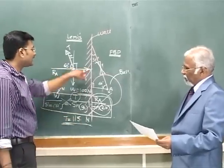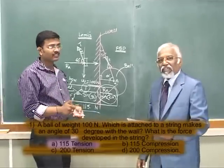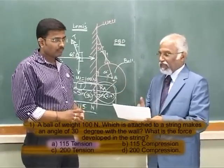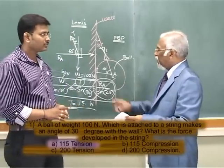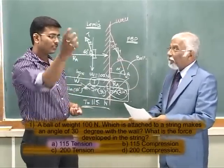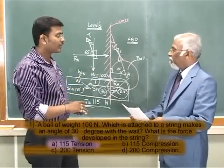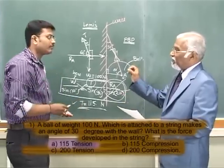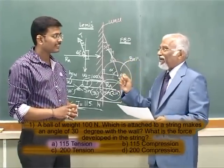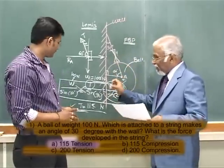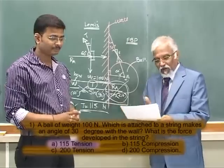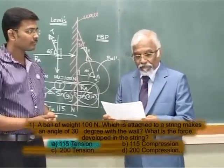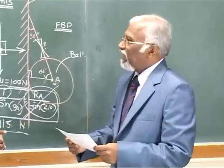Since tension was already identified from the start, Options B and D (compression) are eliminated, leaving only Options A and C. After calculations, Option A — 115 Newtons tension — is the correct answer. In an examination, you must prepare early, apply directly, and get to the result instantly.